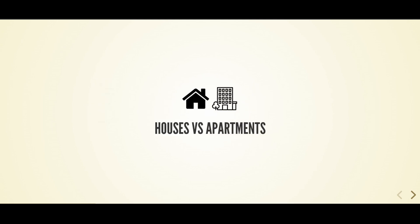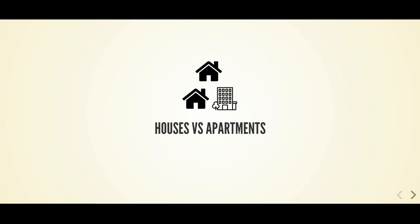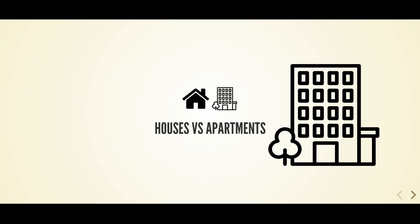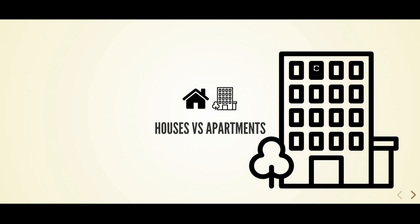Think of the traditional operating system model as a scenario where your computer is a big house, and programs are like different families. Each family gets its own house, complete with separate kitchens, bathrooms, and living rooms. This means if you have 10 families, you need 10 houses, which takes up a lot of space and resources. In contrast, containerization is like a large apartment building — each family lives in their own apartment, sharing common resources like the heating system, roof, and kitchen. This way, you can fit many families in one building efficiently, without wasting space or resources.